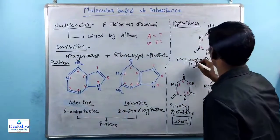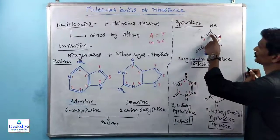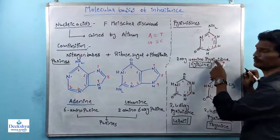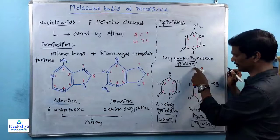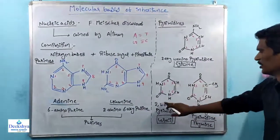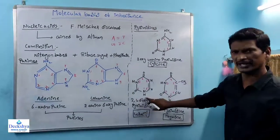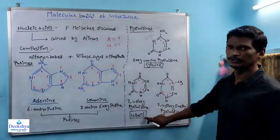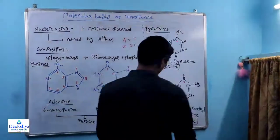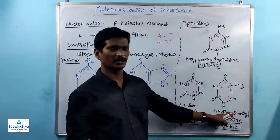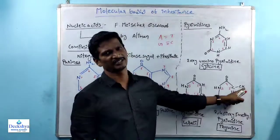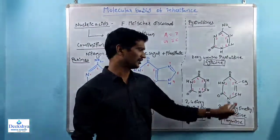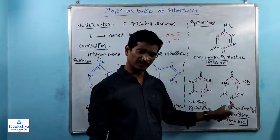For pyrimidines: Cytosine is 2-oxy, 4-amino pyrimidine. Uracil is 2,4-dioxy pyrimidine. Thymine is 2,4-dioxy, 5-methyl pyrimidine — a methyl group is added at the 5th position compared to Uracil.